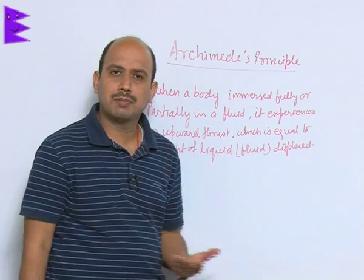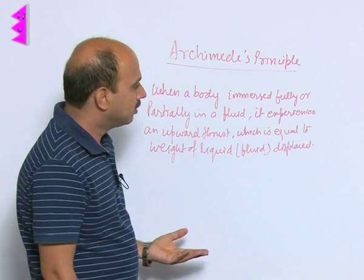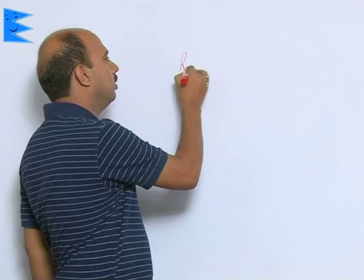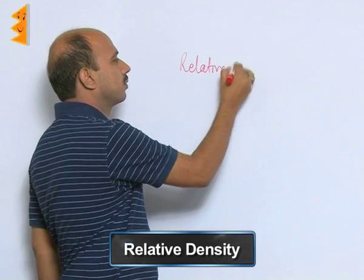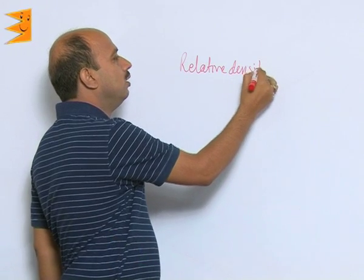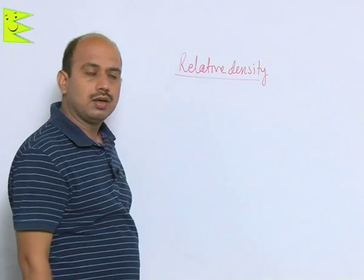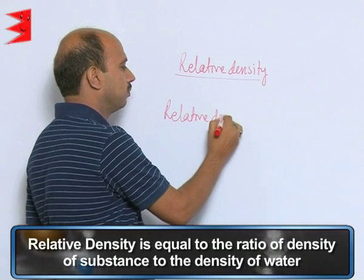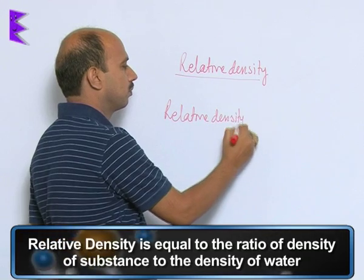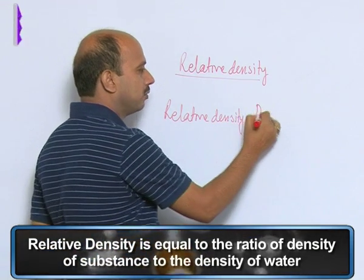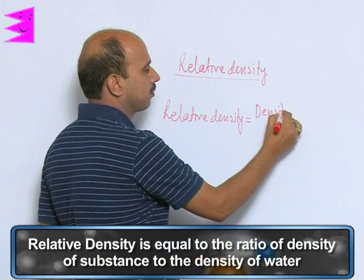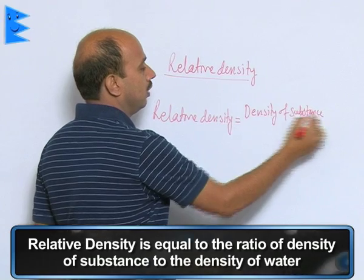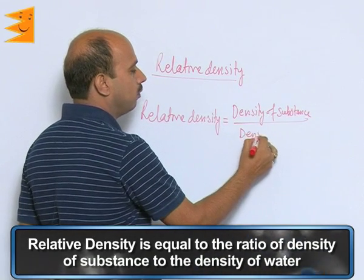As I have told about submarines, lactometers - all these things are based on the principle of Archimedes. Relative density. Relative density is equal to density of substance divided by density of water.